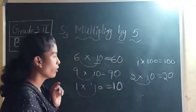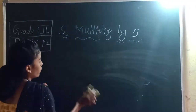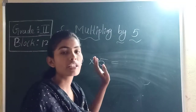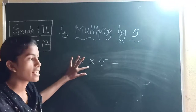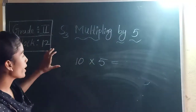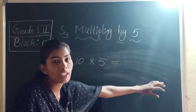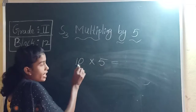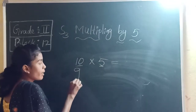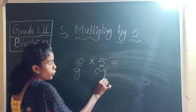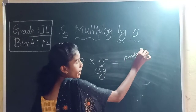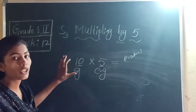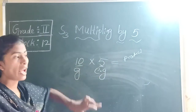Now, 10 into 5. Can you say this problem in a multiplication sentence? In multiplication, we have groups and each group. Here, how many groups are there? 10 groups of 5 — the first number represents groups and the second number represents each group. The answer is the product. This is the way to write a multiplication sentence.